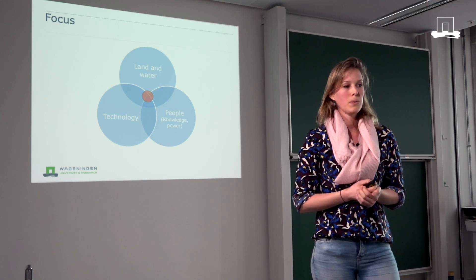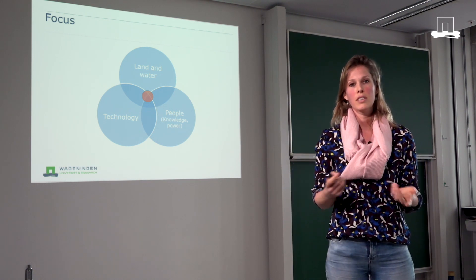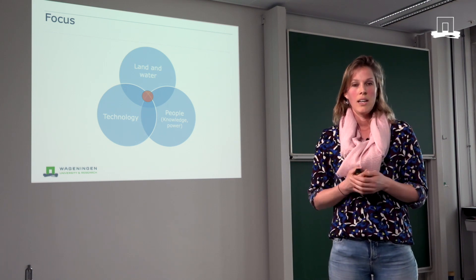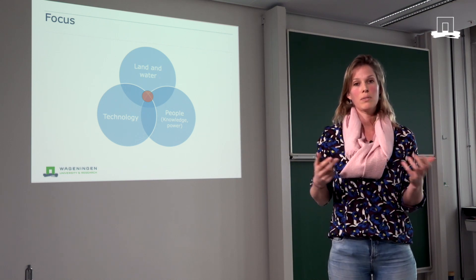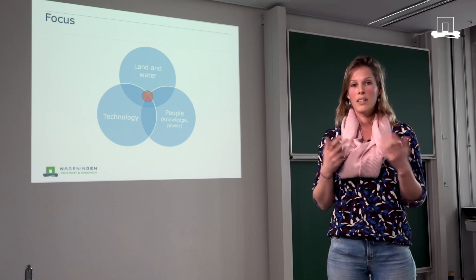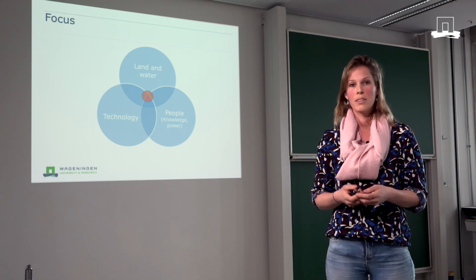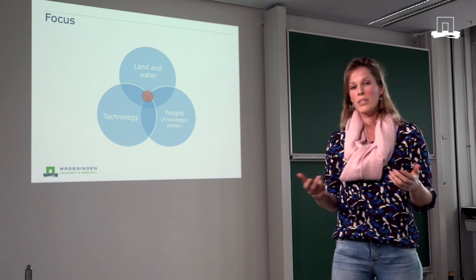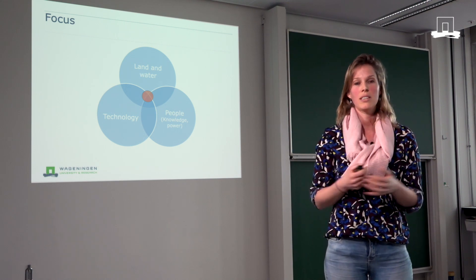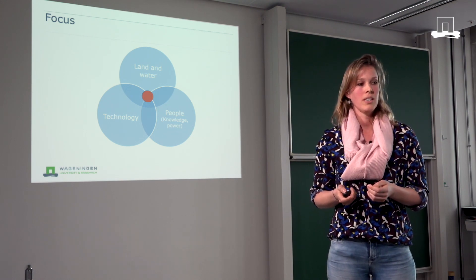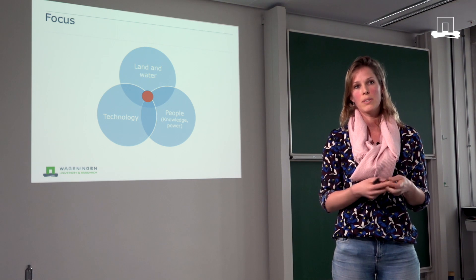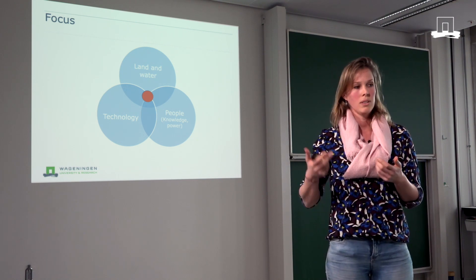In our programme we look at how we can prevent these things and make sure that land and water is managed in a professional way. In the Land and Water Management programme you will work with three things. The first is the land and water that is available. We also work with technology, because for land and water to be managed we use technology such as irrigation and agricultural techniques. However, humans are also very important — humans work the land and make sure that it is managed. So you also need to learn about what humans do in land and water management. You will learn to work in the middle of these three areas.